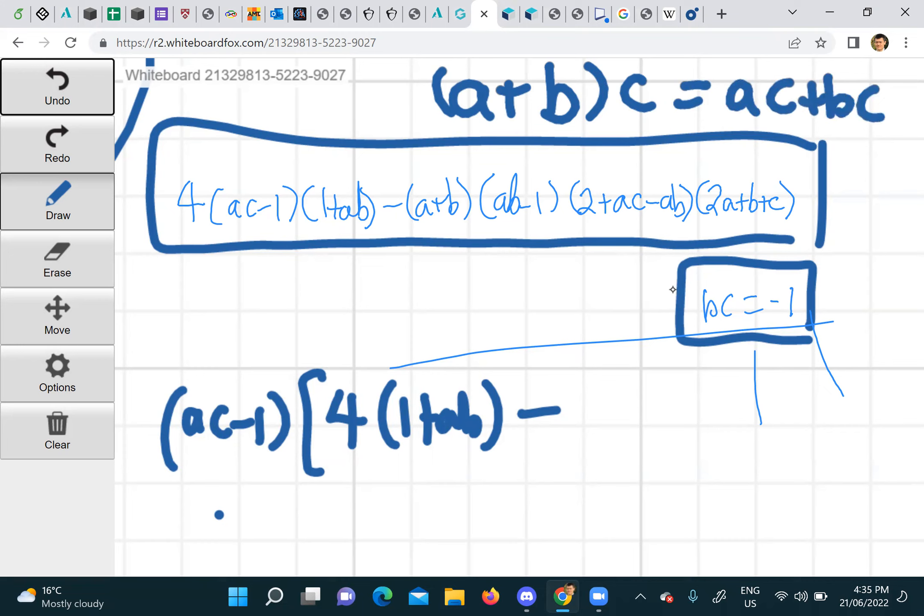Wait, why did you stop? I didn't know that. Oh okay, bc is minus one, so if you times the first thing by c, you get the bc minus one in the first factor.